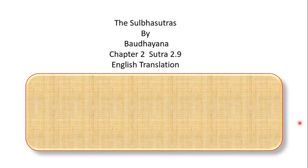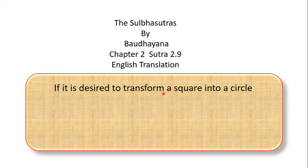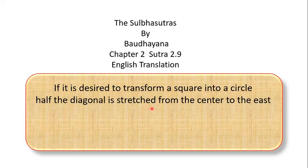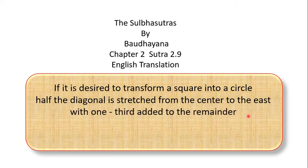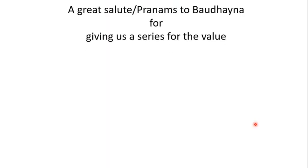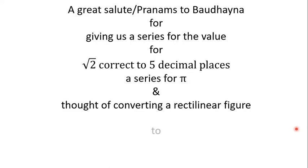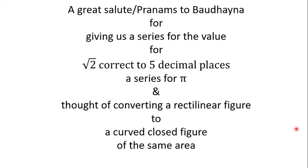This is the English translation of Sutra 2.9: 'If it is desired to transform a square into a circle, half the diagonal is stretched from the center to the east, with one-third added to the remainder' — meaning one-third of the remainder beyond half the side — 'in order to get the required circle.' This beautifully describes the construction, and we offer great pranams to Baudhayana for giving us series for both π and √2, and for conceiving the transformation of a rectilinear figure into a curved closed figure of equal area, all the way back in 800 BC.